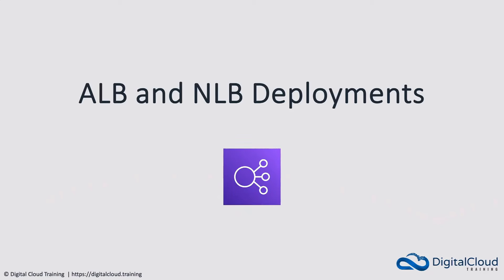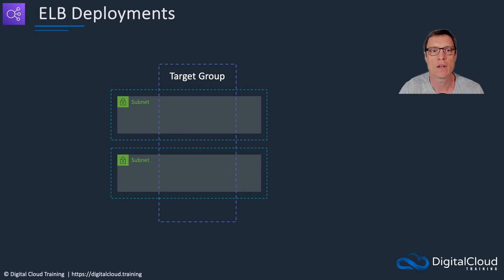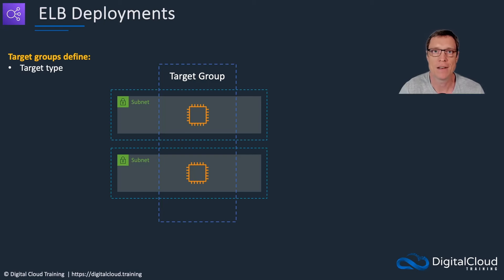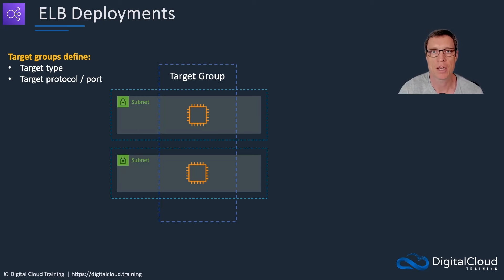In this lesson we're going to cover ALB and NLB deployments in more detail. With ALBs and NLBs we always have target groups, and that's where we can register our instances. The target groups define the target type — for example, is it an instance, a Lambda function, or an IP address — and the target protocol and port. The target protocol and port is the protocol and port on which the application is running on the instance itself. So if it's a web server, it's going to be HTTP port 80 or HTTPS port 443 by default.